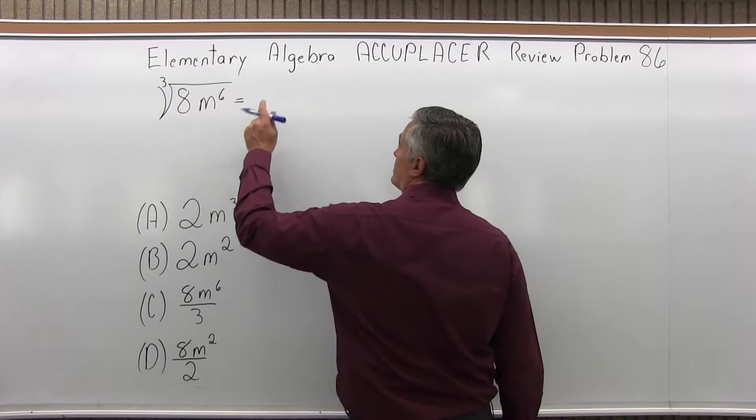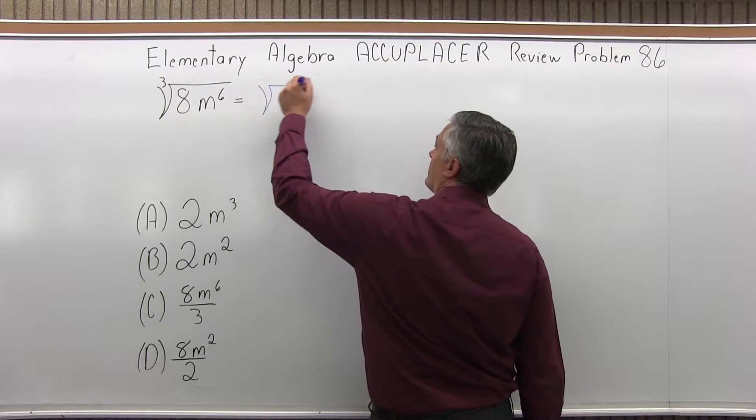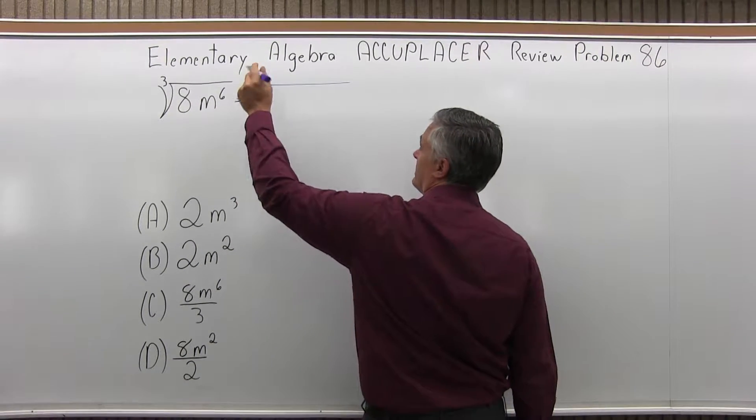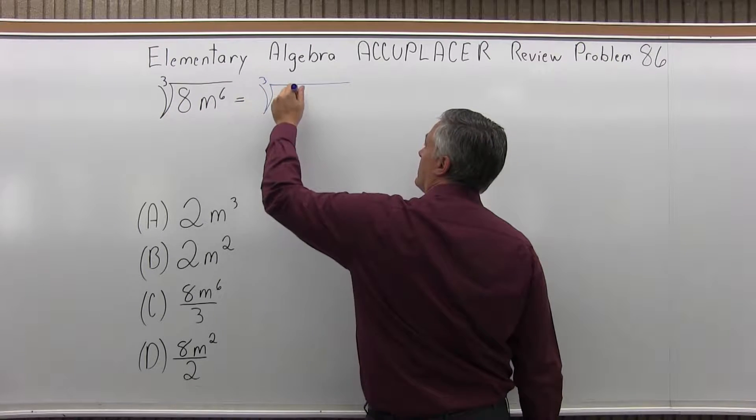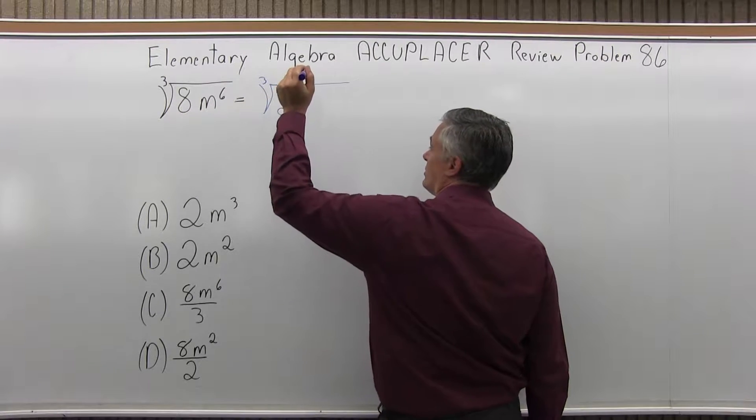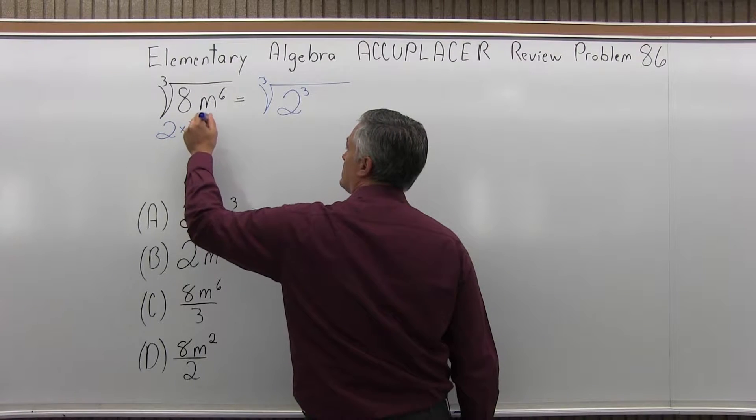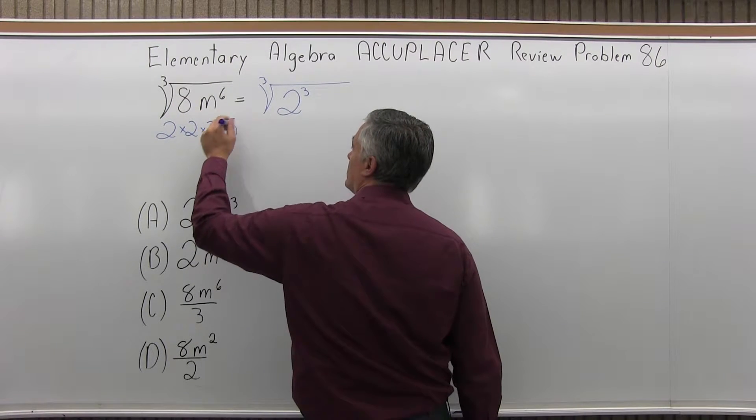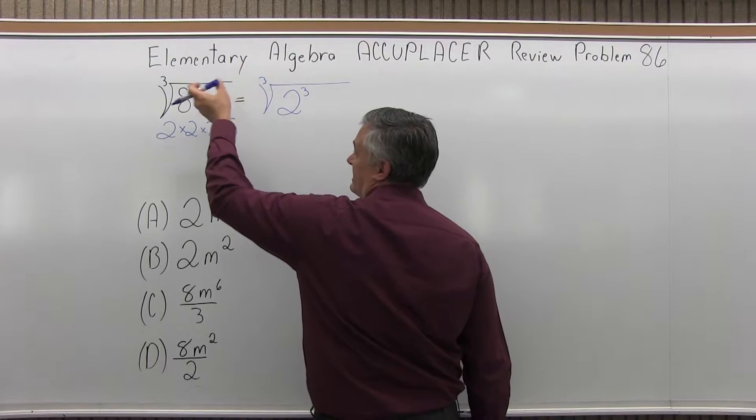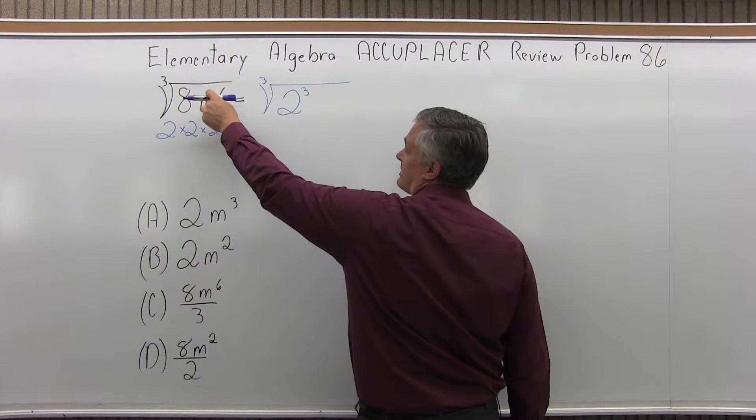Well, to solve this, I would like to rewrite what's under the cube root a little bit. That 8, I can write as 2 to the 3rd because 2 to the 3rd is 8. 2 times 2 times 2 again is 8. So I like 2 to the 3rd better than 8. It's the same thing, but this format's going to be better for me.